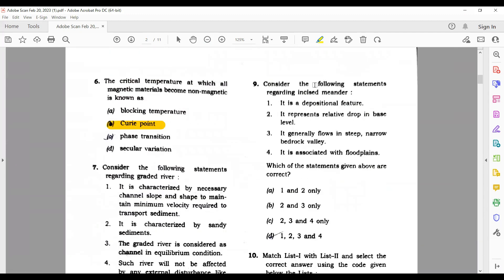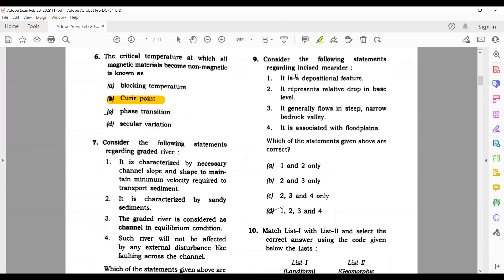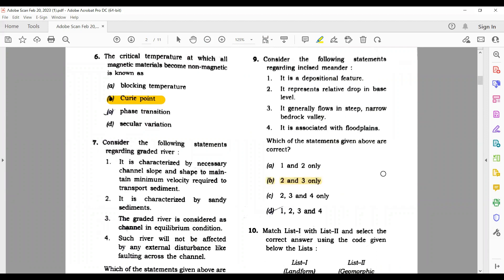Question number nine - consider the following statements regarding incised meanders. Let's read them. It is a depositional feature? No, it is not a depositional feature. So first can be done, A or B can cancel. It represents a relative drop in base level? Yes. It generally flows in steep narrow bedrock valley? Yes. It is associated with floodplain? No. So correct options are only two and three.